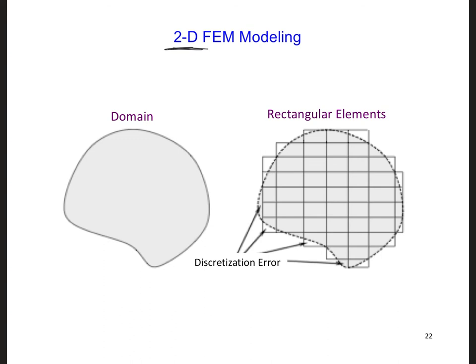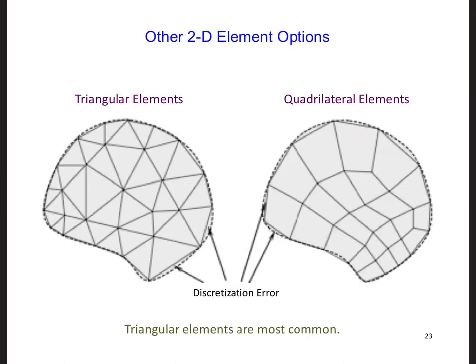For example, here you can see that if we use a simple arrangement of rectangular elements to model this complex shape, we're going to get this discretization error. But if we strategically position the nodes of the grid so that they are positioned along the surface of the domain, the model can match the shape of the domain much better.